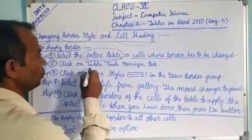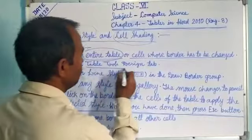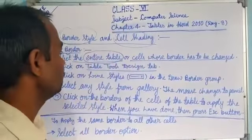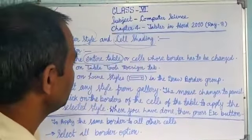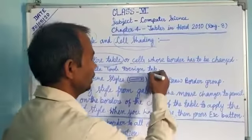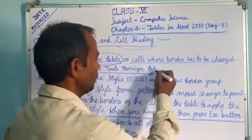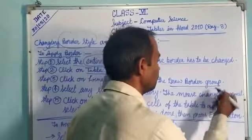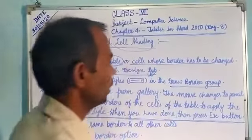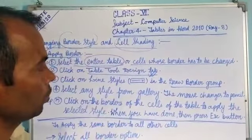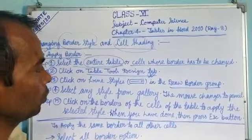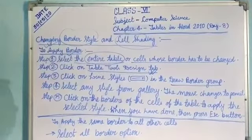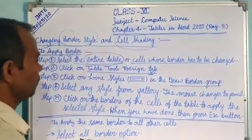After that, you have to go to the Table Tools Design tab. Click this tab — the Table Tools Design tab. Whenever you click this tab, you will find the Draw Borders group. Go to the Draw Borders group, where you can find many options.